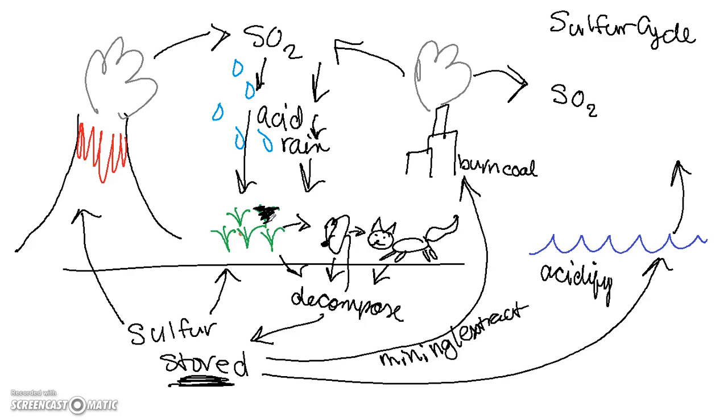So that's a quick overview of the sulfur cycle. Sulfur is stored underground in rocks and soil. And then it's released every once in a while through the erosion of ocean sediment or through a volcano naturally. And then that sulfur dioxide in the atmosphere comes back down to the surface in acid rain.